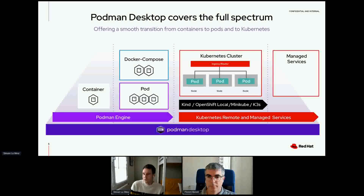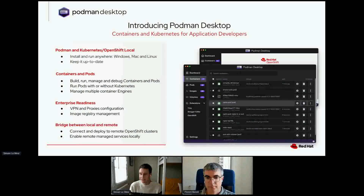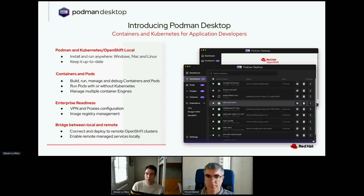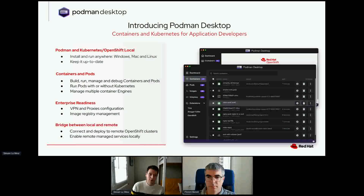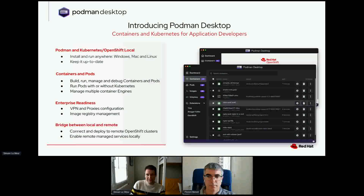Inside Podman Desktop you'll find capabilities to get Podman and a Kubernetes distribution. It installs and runs anywhere — Windows, Mac, and Linux — and keeps your Podman environment up to date. You have functionalities for interacting with containers and pods, managing multiple container engines, configuring VPN and proxies for air-gapped or secure environments, configuring different image registries, and bridging your local environment with remote services.